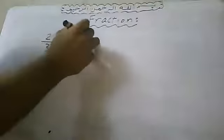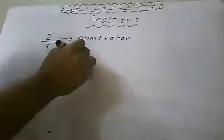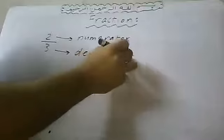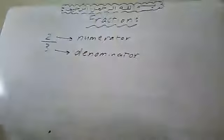Two over three — two is called the numerator, three is called the denominator. Note: the numerator is the top number and the denominator is the bottom number of a fraction.